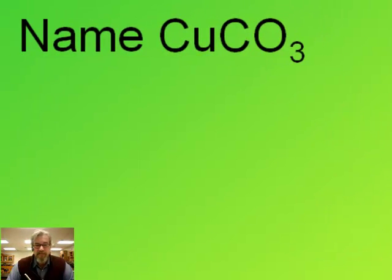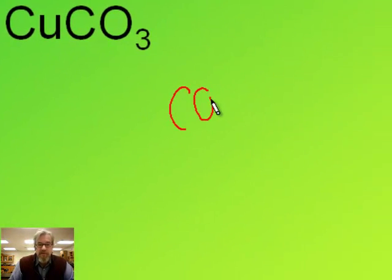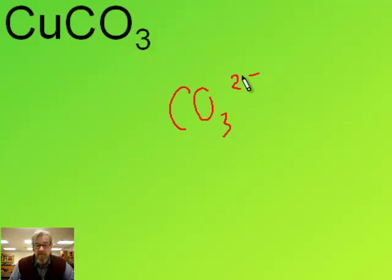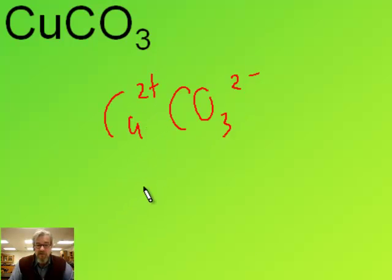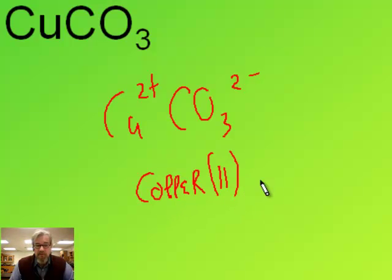CuCO3. CO3 two minus is a polyatomic ion — carbonate. Because it's a two minus charge and there's one of them, the total negative is two minus. So the total positive must be two plus. The copper here has got to be Cu two plus. So I write the name: copper, Roman numeral two, and then carbonate.